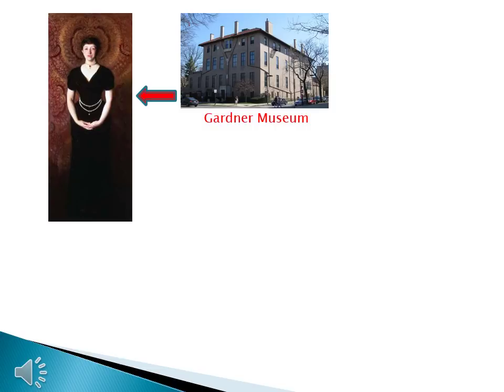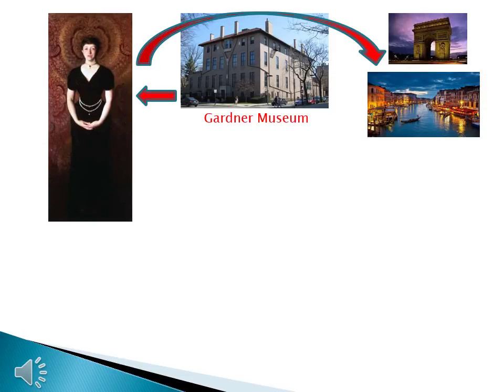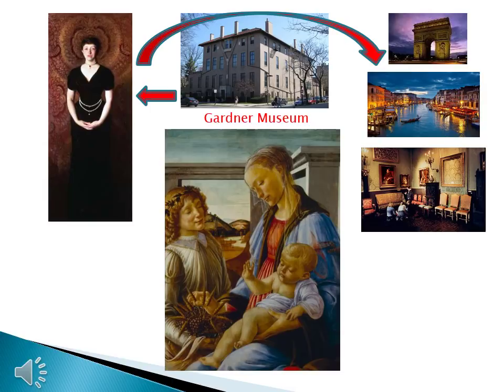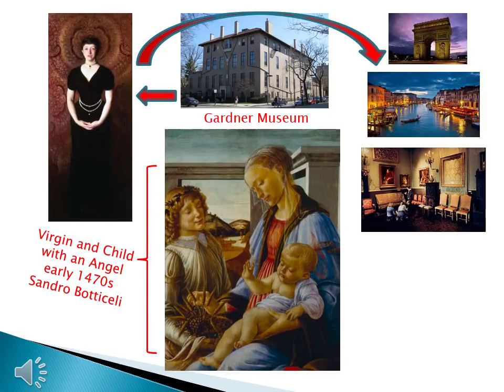Gardner married a really rich guy, and they had a baby, but that baby died. To get over the death of her child, Gardner went on a road trip to Europe, and she visited places like Paris and Venice. While she was there, she bought a lot of really cool stuff, which she brought back to Boston and decorated her house with. When Gardner died, she left her house and everything inside it to the people who now run this museum. Gardner bought some important Renaissance art, like this painting, which is called Virgin and Child with an Angel. It's from the early 1470s, and it was painted by Sandro Botticelli.